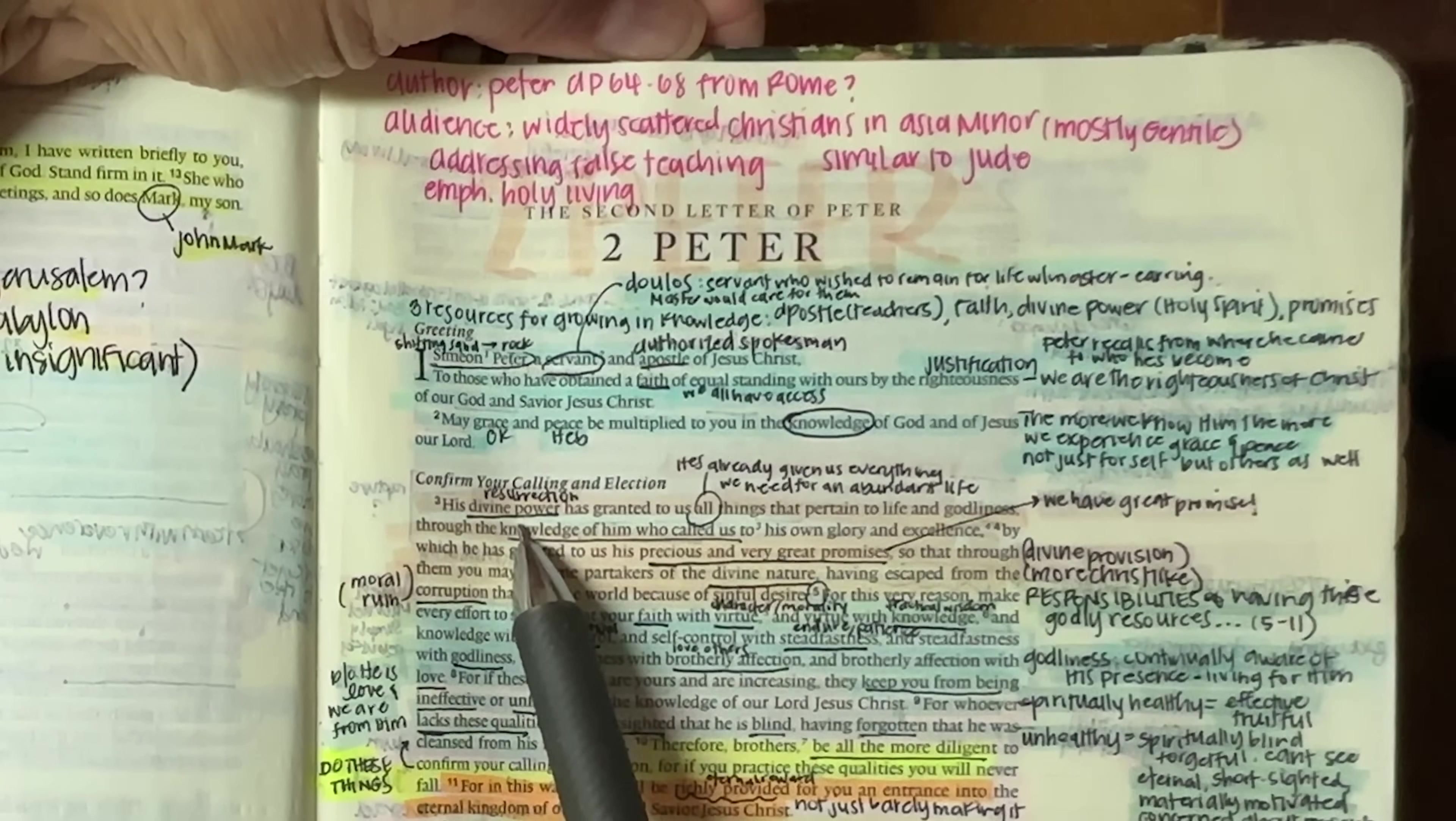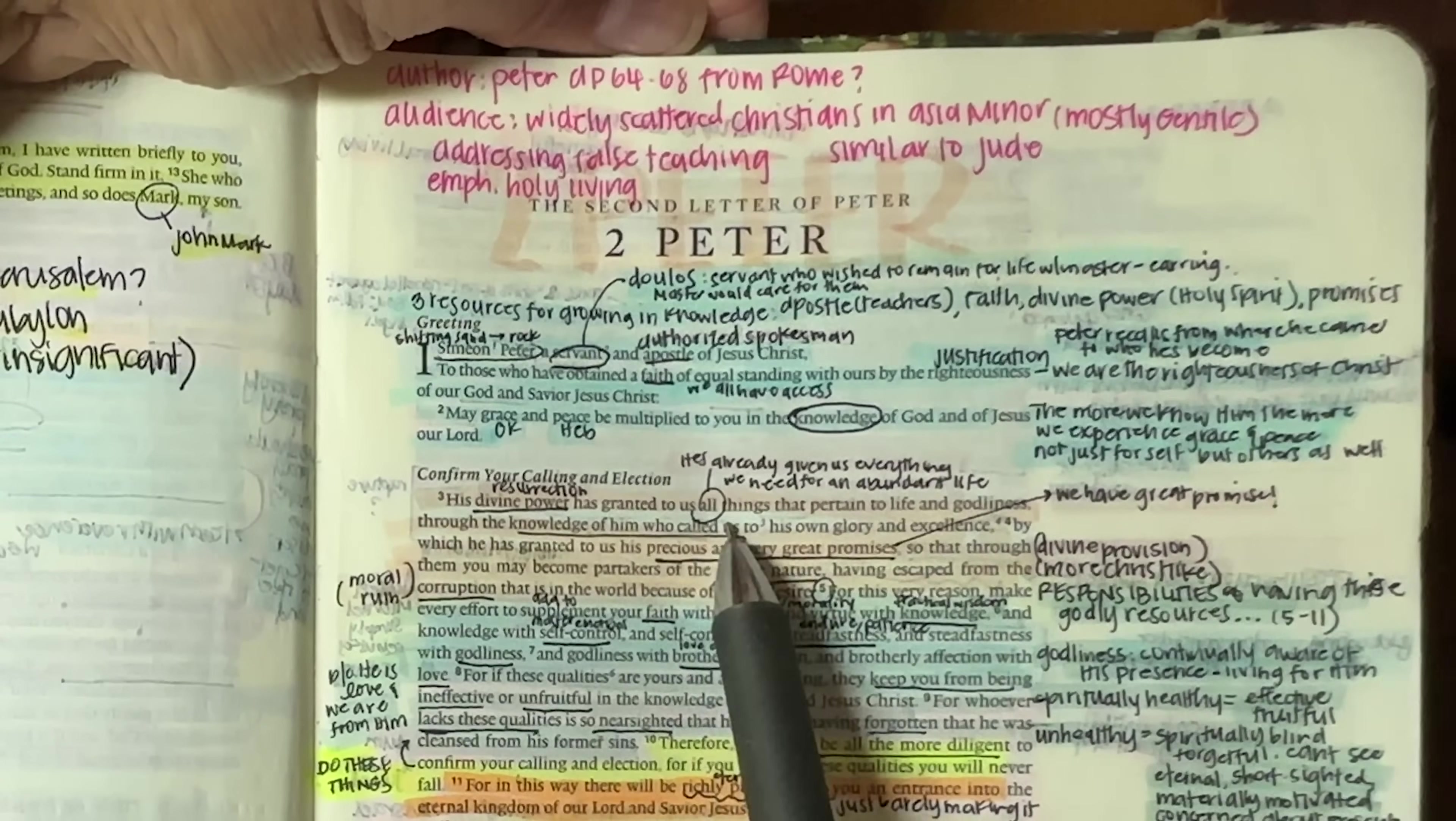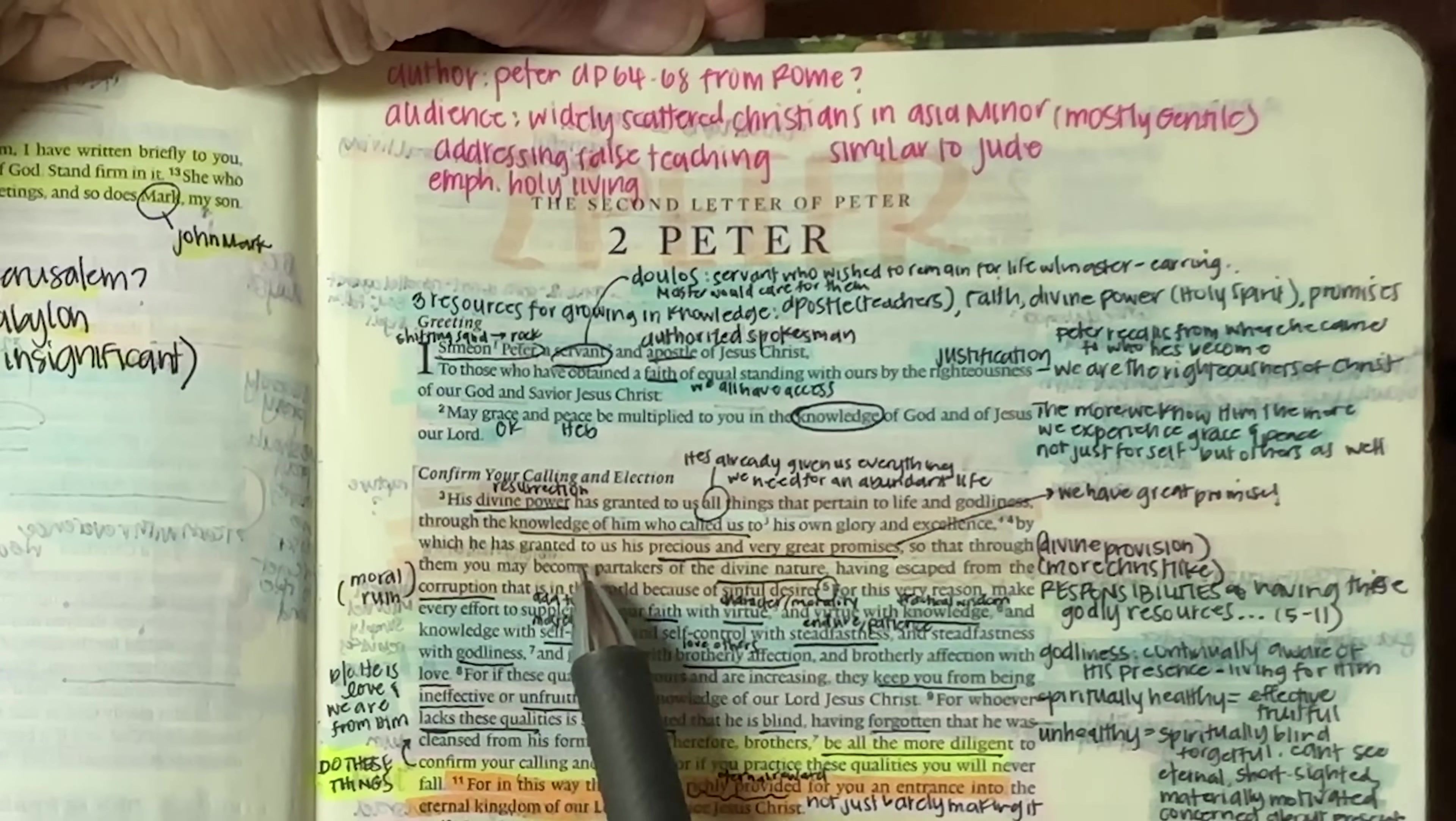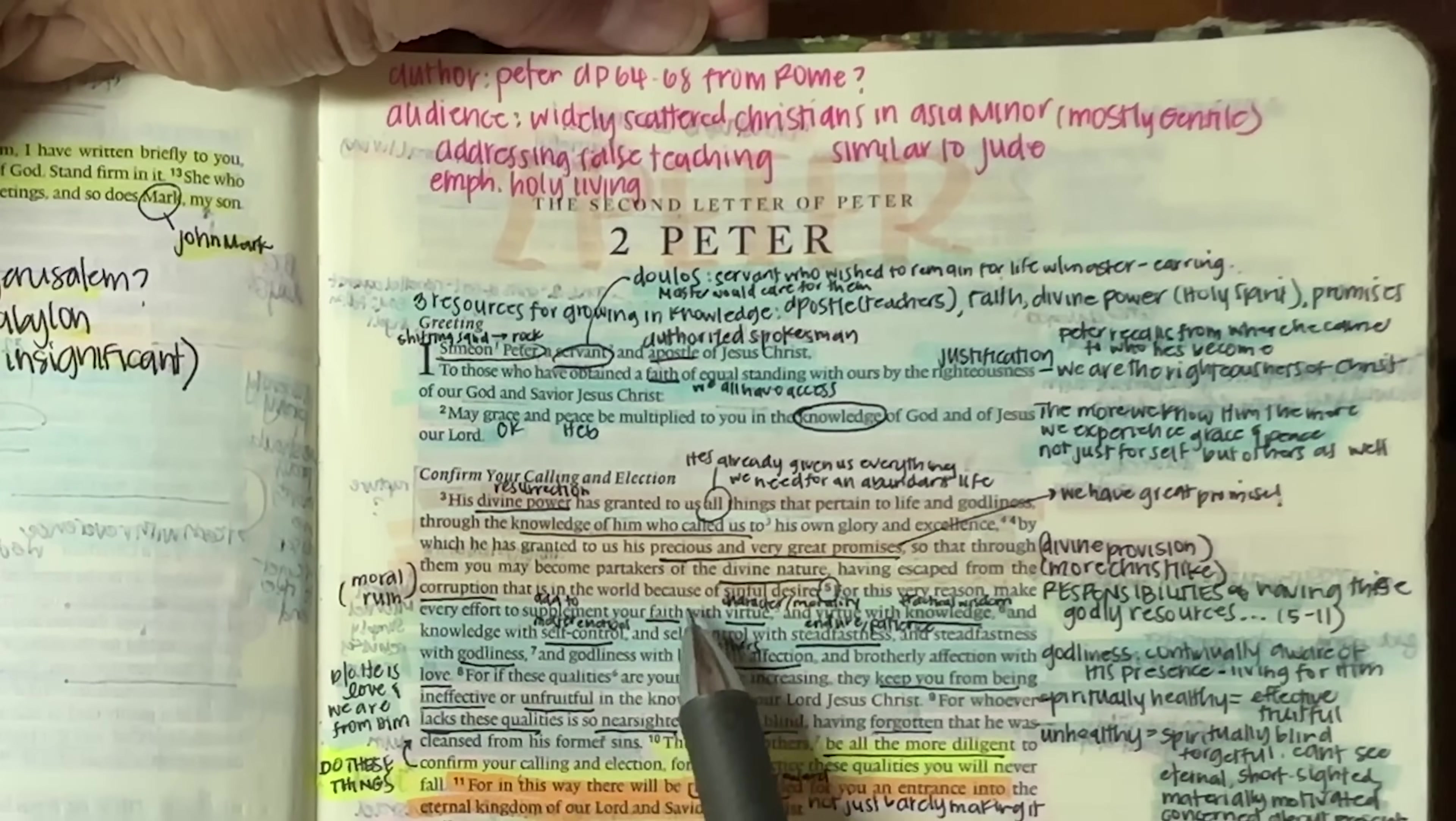His divine power, meaning the power that rose Jesus from the dead, has granted to us all things that pertain to life and godliness. So all things means he's already given us everything that we need in order to live an abundant life. So by that power, he's given us all things that pertain to life and godliness through the knowledge of him who called us to his own glory and excellence. So we have been called and we have the knowledge of the one who called us by which he has granted to us his precious and very great promises. So we all have great promise in our lives so that through them you may become partakers of the divine nature, having escaped from the corruption or the moral ruin of the world that is in the world because of sinful desire.